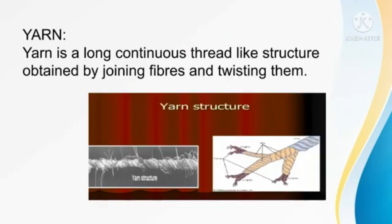Next, yarn. We get yarn from fiber. Yarn is a long continuous thread-like structure obtained by joining fibers and twisting them. Yarn is also called a thread. When fibers are joined and twisted together, they become yarn.